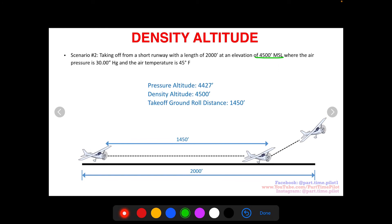In scenario two at 4,500 feet MSL with the same pressure and temperature, our pressure altitude is 4,427 feet and our density altitude is now 4,500 feet — an increase of 3,500 feet from scenario one. When density altitude increases, the actual air density decreases. Our takeoff ground roll is now 1,450 feet, so where we were lifting off halfway down the runway, we're now taking off about 500 feet later, getting close to the end.